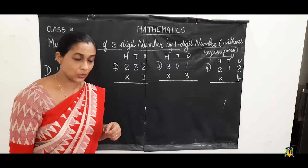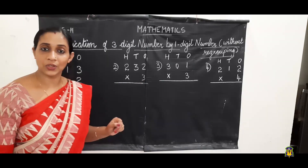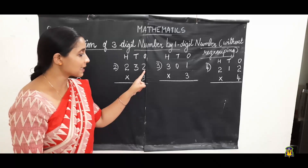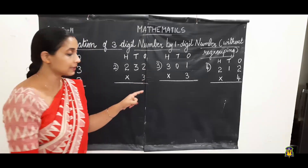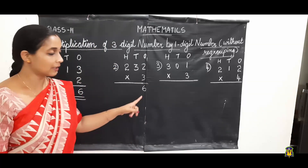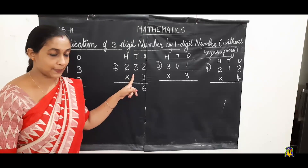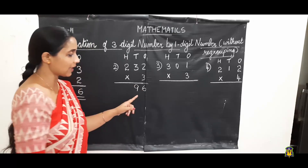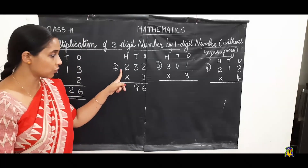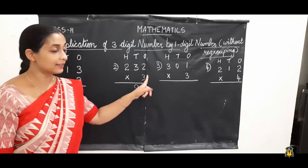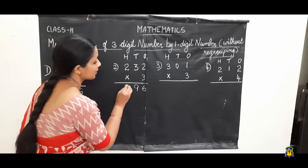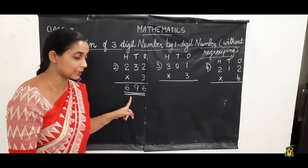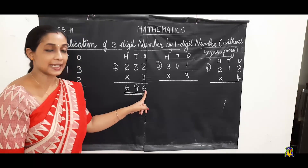The next question is two hundred thirty-two multiplied by three. Here we should know the table of three. Starting from one's place — we have the digit two. Two multiplied by three: two threes are six, and we write it in one's place. Move on to tens place — we have the number three. Three multiplied by three: three threes are nine, and we write that in tens place. Move on to hundreds place — we have the digit two. Two multiplied by three: two threes are six. We write six in hundreds place. So the product is six hundred ninety-six.